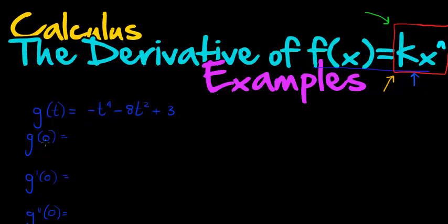We're asked to find g of 0. That just means that instead of the t, we have to replace 0. So everywhere where there's a t will be 0, so this would be 0 to the power of 4 is just 0, minus 8 times 0 squared is just 0. So these first two terms will cancel, and I'll be left with 3.